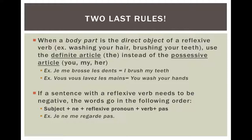Our last rule: if a sentence with a reflexive verb has to be negative, the word order is: subject, then ne, then the reflexive pronoun, then the verb, then pas. We already know that ne and pas go around the verb, and the reflexive pronoun goes with the verb, so it should be in this order. For example: je ne me regarde pas. This is an important order to keep in mind for when you have a reflexive verb in a negative sentence.